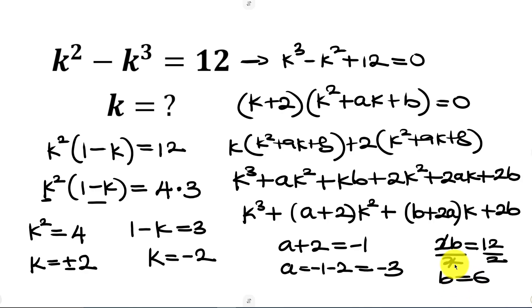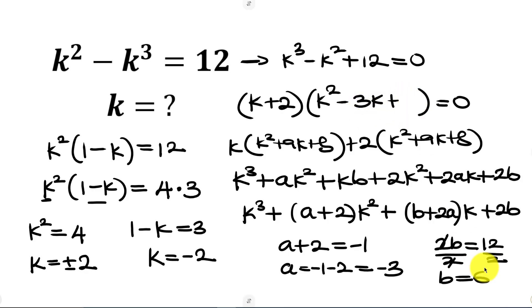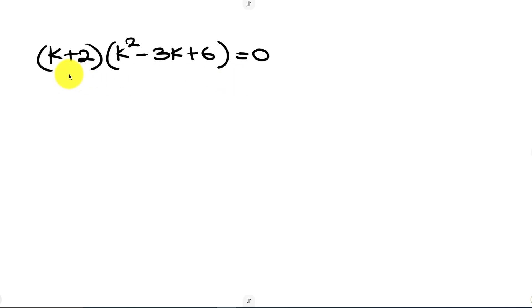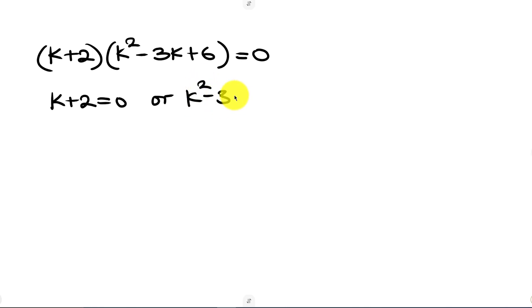Replacing a equal to negative 3 and b equal to 6, the factored expression becomes k plus 2 times k squared minus 3k plus 6 equal to zero. On the left hand side we have two cases: either k plus 2 equals zero, or k squared minus 3k plus 6 equals zero.